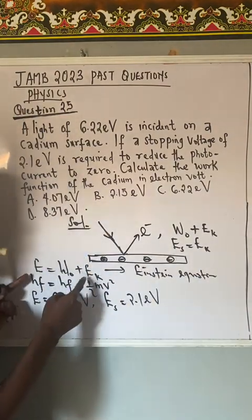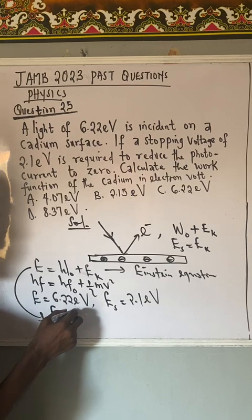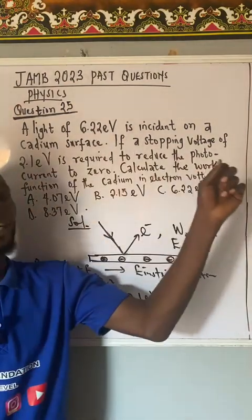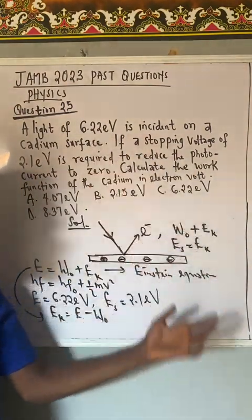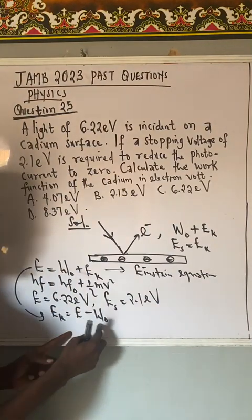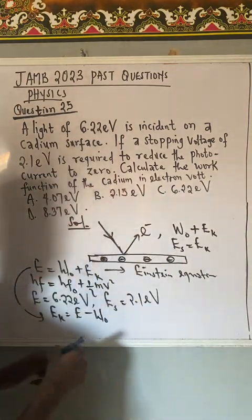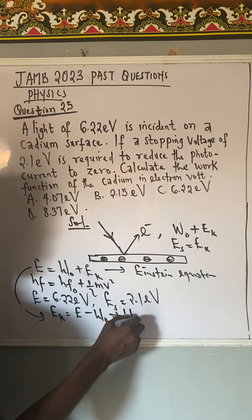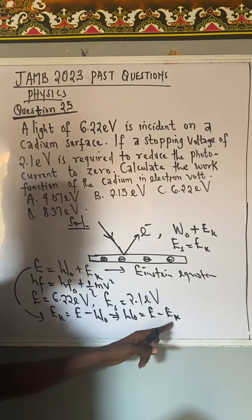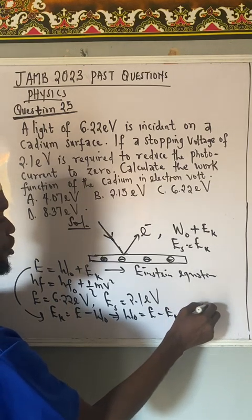I can make EK the subject of formula. I will have EK equal to E minus W naught, where E stands for the total amount of energy needed to eject and move the electron, and W naught stands for the work function. We need to make W naught the subject of formula so that we can have E minus EK. EK is also the same as ES. That means work function can be E minus ES.